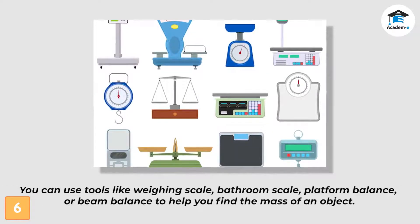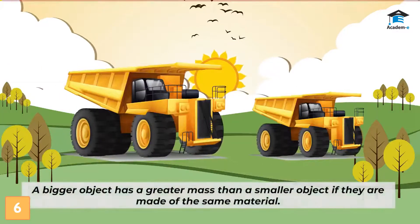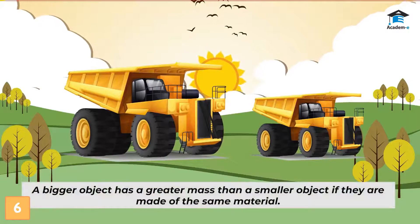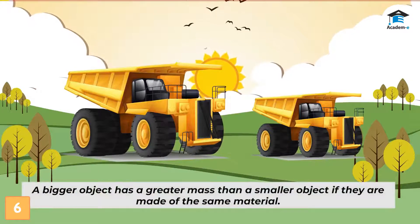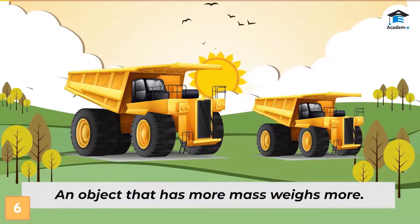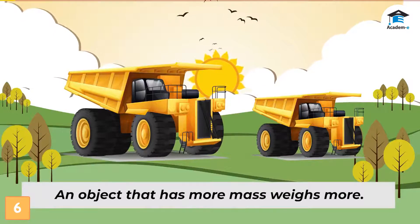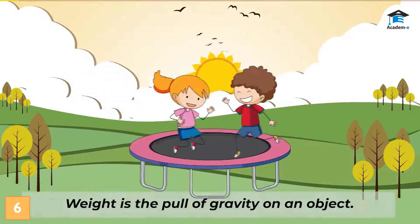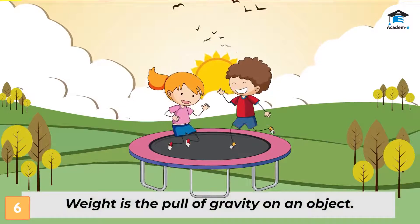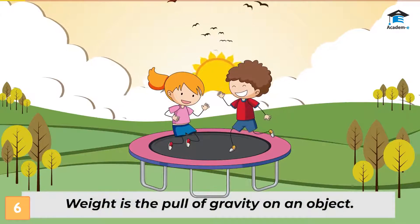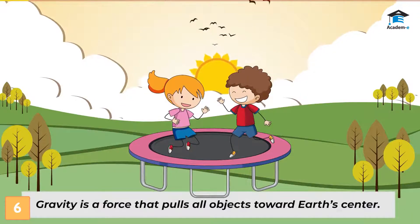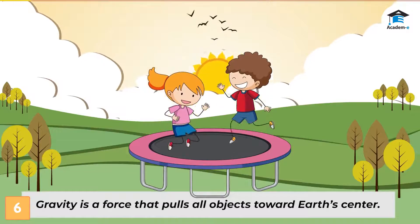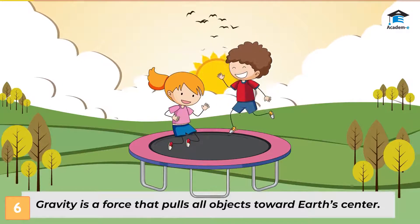On Earth your mass is the same as your weight. All matter has mass. Mass is measured in kilograms or grams. You can use tools like a weighing scale, bathroom scale, platform balance, or beam balance to help you find the mass of an object. A bigger object has a greater mass than a smaller object if they are made of the same material. An object that has more mass weighs more. Weight is the pull of gravity on an object. If you jump up, you fall back down because Earth has gravity which pulls all objects toward Earth's center.